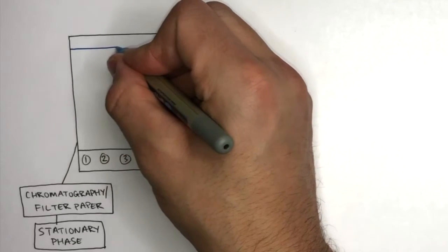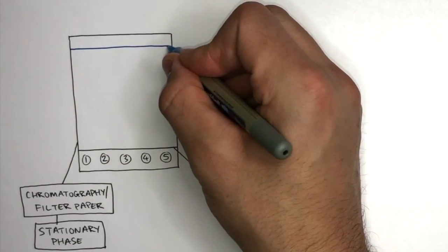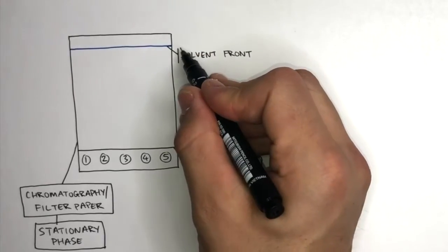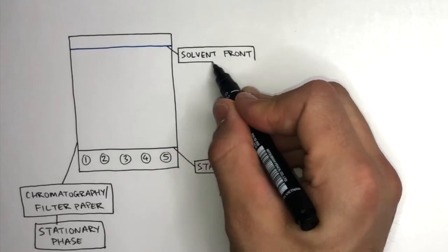This blue line represents the highest point the solvent has reached. This is the solvent front. In other words, also known as the highest point the mobile phase has traveled.